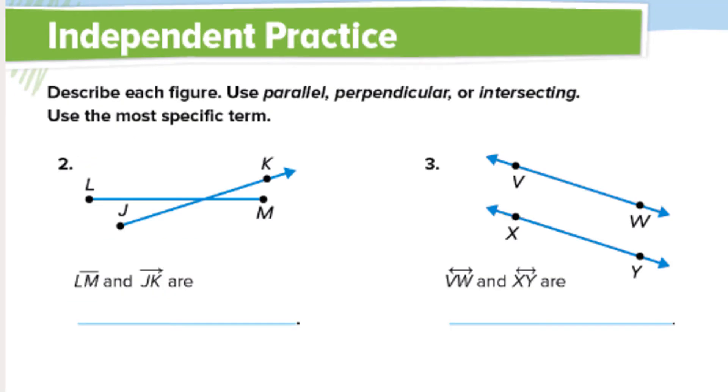Let's move on to number two and three. LM line segment, LM, in comparison to ray JK, line VW, in comparison to line XY. Turn off the video, write in your answers. You should have got that they were intersecting for number two and parallel for number three.